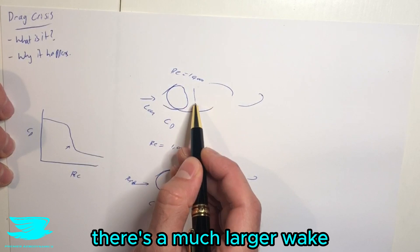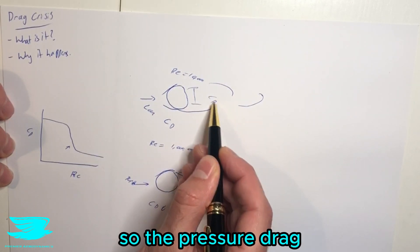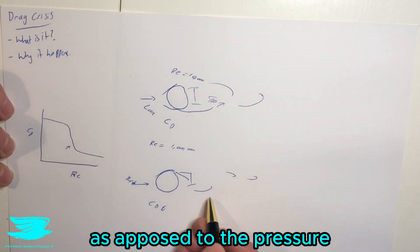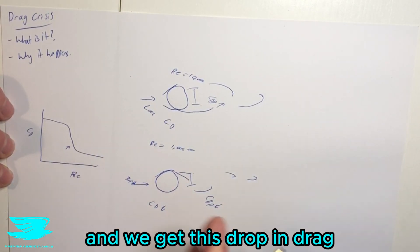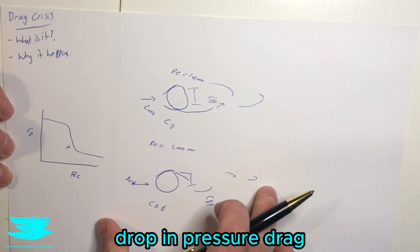As opposed to here, there's a much larger wake. So the pressure drag is quite high here, as opposed to the pressure drag is quite low here. And that's where we get this drop in drag, predominantly because of this drop in pressure drag.